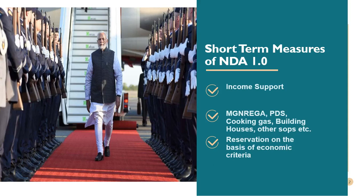As the 17th Lok Sabha elections approached, the government realized the enormity of the economic challenge and the widespread rural distress. It announced reservation on the basis of economic criteria to placate a lot of general category people facing the economic slowdown. However, these measures cannot be said to be sustainable or long-term — they are basically short-term and provide only temporary relief. In simple words, these measures mean mere survivability; they don't ensure security and sustainability.